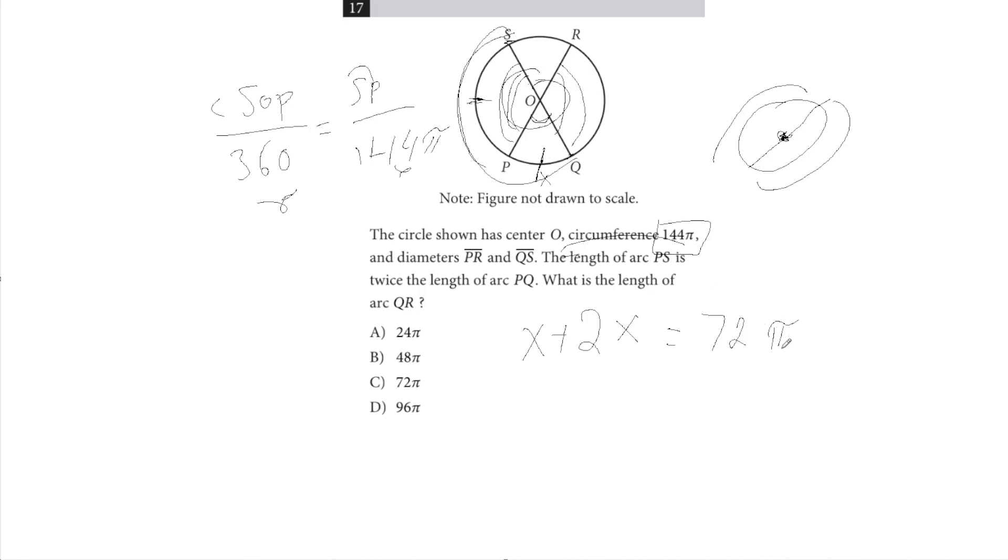So now we get 3X equals 72 pi. We divide both sides by 3, and we get X equals 24 pi. So that's the length of PQ, and coincidentally also the length of SR.